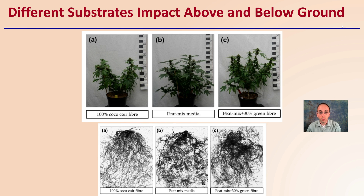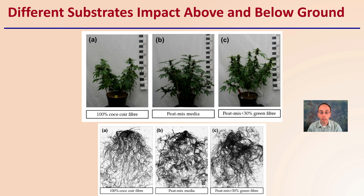Now what do the actual plants look like? This is a good general comparison here. Looking not only at the plants as seen in the above image, but also the root structure of each. We can see some differences: coconut fiber caused the greatest degree of spacing out the roots and the greatest surface area of coverage, while the peat mix plus 30% green fiber showed denser pockets and regions. We can also see how that impacted the plant growth in the above portion of the plant.